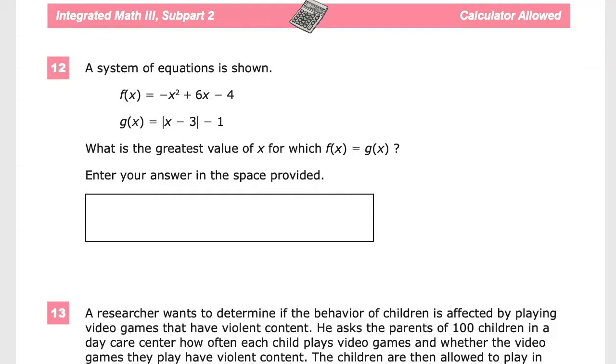A system of equations is shown. f(x) is equal to negative x squared plus 6x minus 4, and g(x) is the absolute value of x minus 3 minus 1.